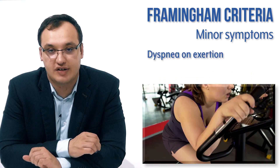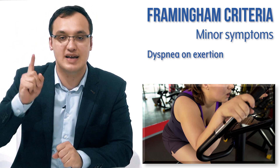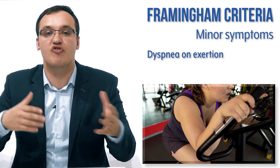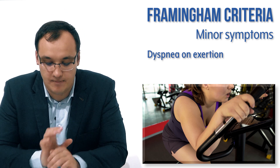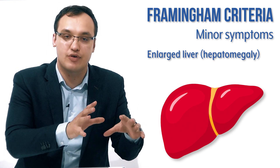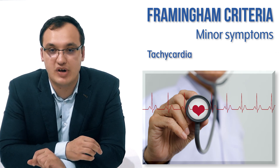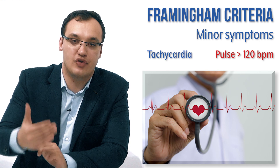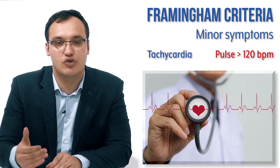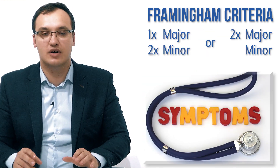Another minor criterion is dyspnea on ordinary exertion — breathing difficulty with regular movement or exercise, as opposed to the major criterion of paroxysmal nocturnal dyspnea. Instead of cardiomegaly (enlarged heart), in the minor criteria we have hepatomegaly — an enlarged liver. The final minor criterion is tachycardia: a pulse of more than 120 beats per minute.